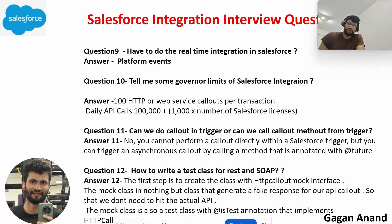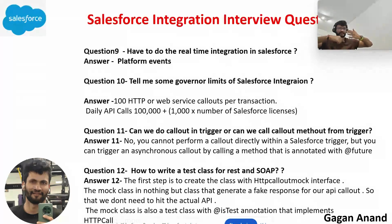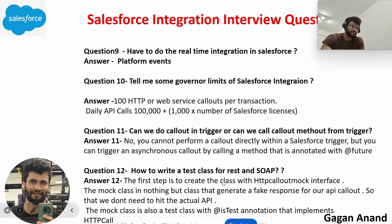Eleventh question: can we do a callout from a trigger? It is not recommended — you cannot perform a synchronous callout from a Salesforce trigger. If inside the trigger you are doing some operation and then making a callout, it will fail with an 'Uncommitted Work Pending' error. Instead, you should use a future method to trigger an asynchronous callout from the trigger.